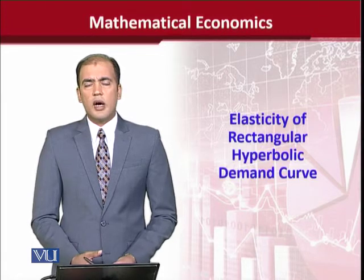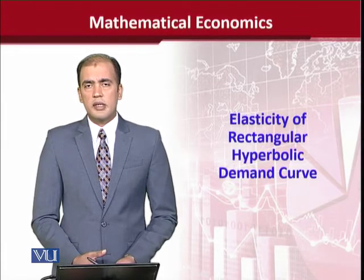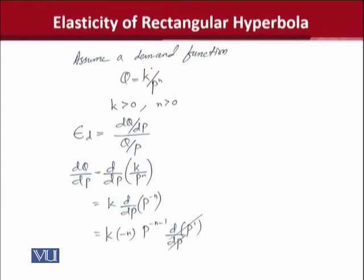We shall see how it is related with elasticity. Now you can see there is a demand function that we have assumed and it is slightly unusual. As you can see, price appears in the denominator and a constant appears in the numerator. The assumption is that k is positive and the power n is positive.